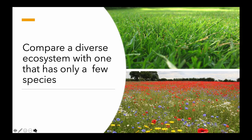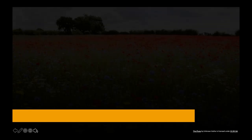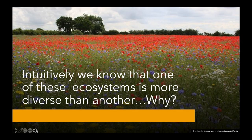Let's compare a diverse ecosystem with one that has only a few species. Here we have an ecosystem of maybe a thousand different plant species, and you can see that they each have different flowers. Compare that to a soccer field, which maybe has two kinds of species. The question is: which one has more biodiversity? You probably said that one of these ecosystems is more diverse than the other — the field of flowers.